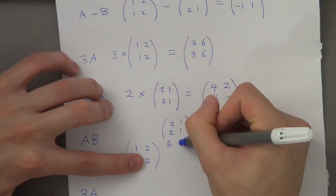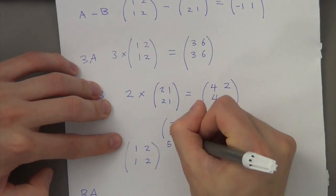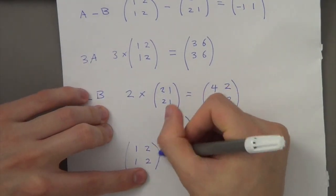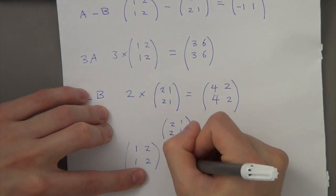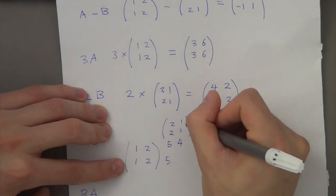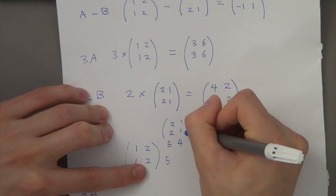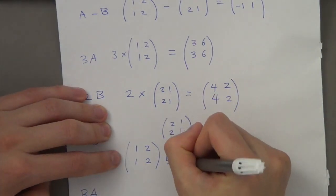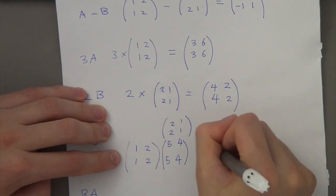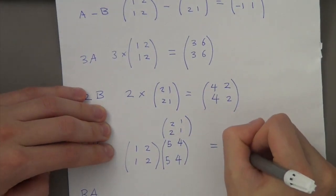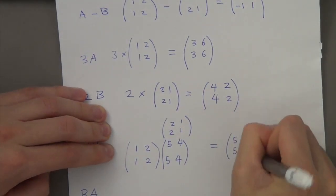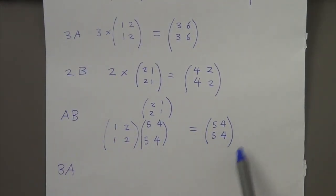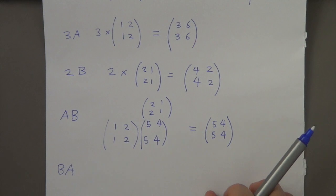Now 1 times 1 plus 1 times 2 is 3, so 3 plus 1 is 4. Then 2 times 1 plus 2 times 2 is 4, so 4 plus 1 is 5. And 1 times 1 plus 1 times 2 is 3, so 3 plus 1 is 4. So my final matrix is what I have in the middle. Pause the video just to make sure you've got that.